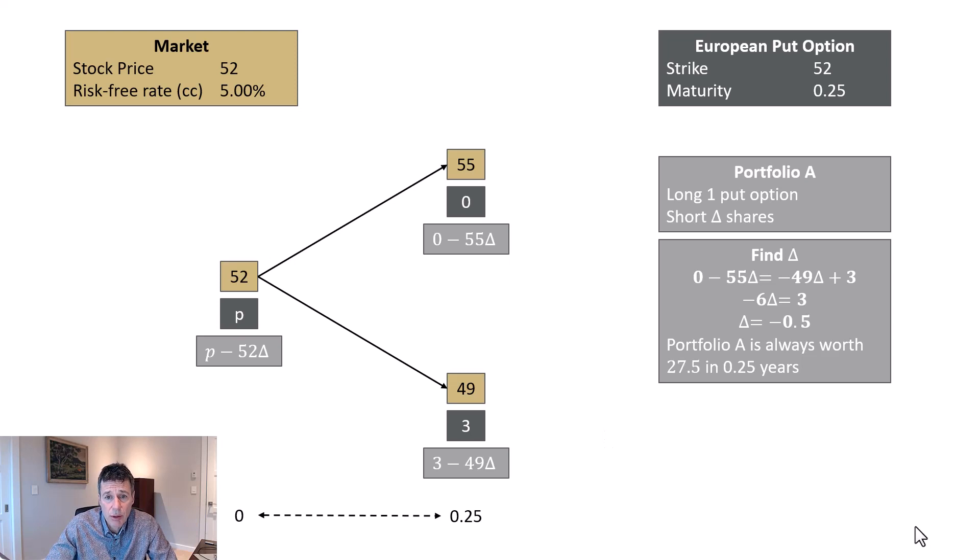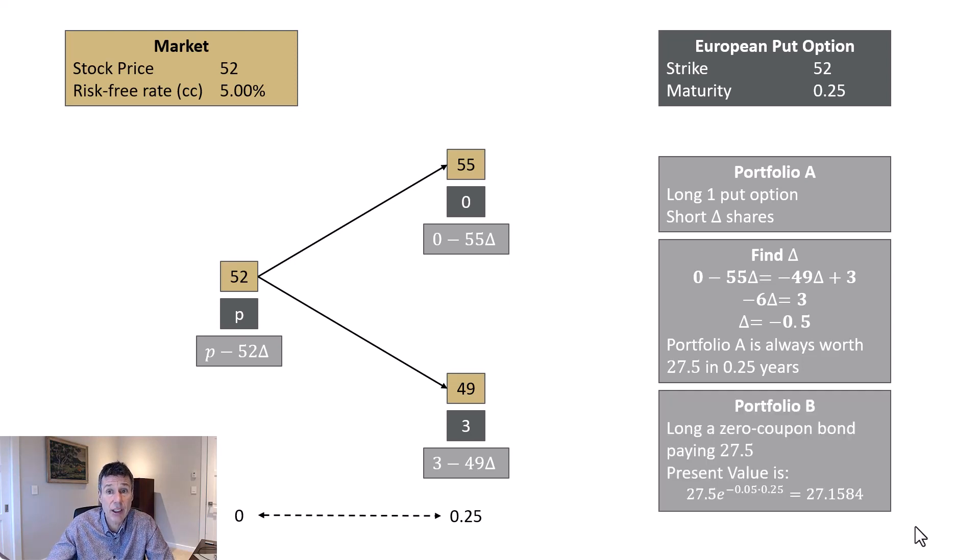There's another portfolio we know, which is also worth 27 and 1/2, no matter what happens. And that is being long a zero coupon bond, paying 27 and 1/2. That portfolio is always worth 27 and 1/2, and we know the present value of that portfolio. The present value of a zero coupon bond is 27 and 1/2 e to the minus RT, or 27.1584.